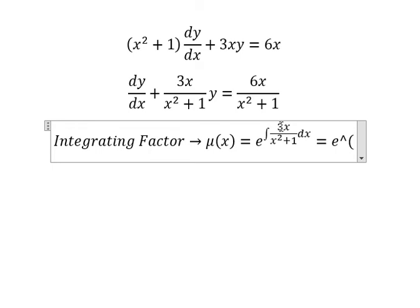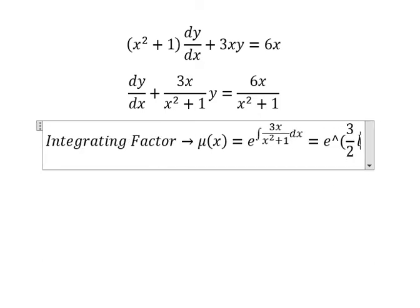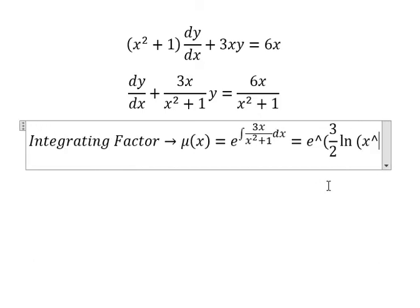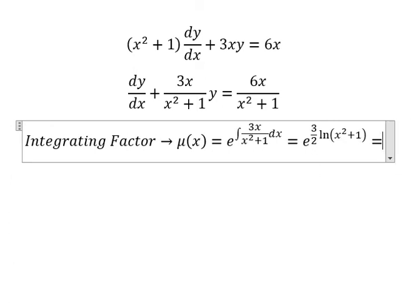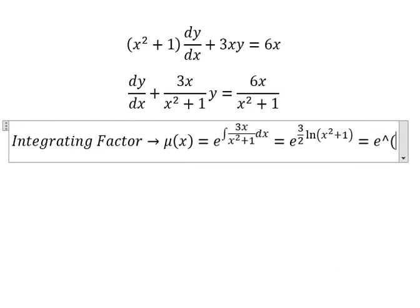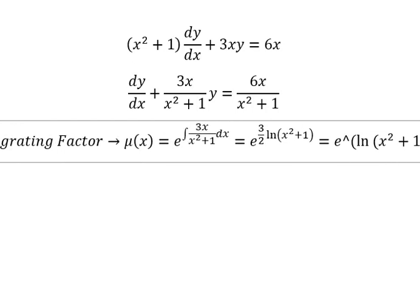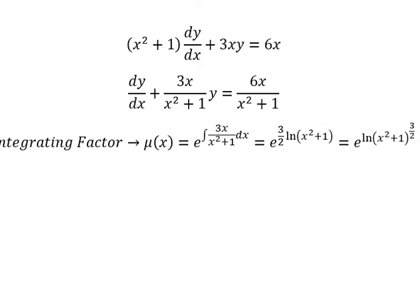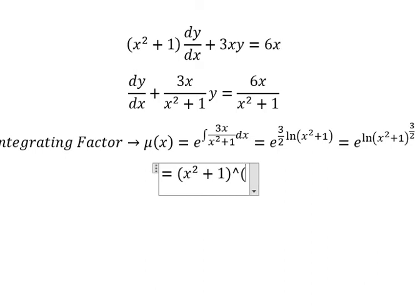We put the 3 outside and integrate s over (x² + 1). We get 3/2 times ln(x² + 1), and then 3/2 goes inside the natural log. From this, we simply find that the result is (x² + 1) to the power of 3/2.